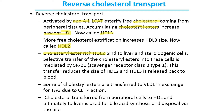HDL2 binds with the liver and sometimes with steroidogenic cells. The selective transfer of cholesterol esters into the cells is mediated by the receptor SRB1, or scavenger receptor class B type 1. SRB1 attaches to the HDL2 molecule, takes in the cholesterol, and reduces the size of HDL2 and HDL3, releasing them back into the bloodstream. There is also an exchange of material with LDL: cholesterol esters are exchanged for TAGs via the CETP protein. In this way, cholesterol is transferred from peripheral tissues through HDL ultimately to the liver cells.